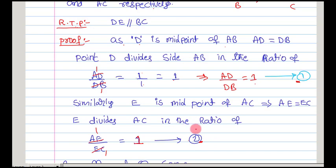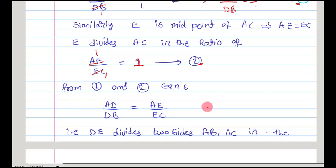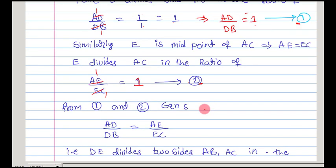If you observe equation 1 and equation 2, in both equations the RHS parts are equal to 1. So, as RHS parts are equal, we can equate the LHS parts. From equation 1 and equation 2, AD by DB is equal to AE by EC.